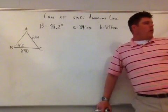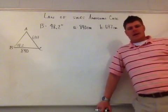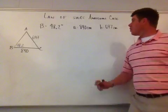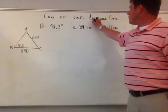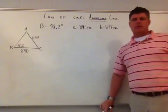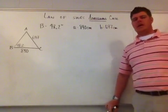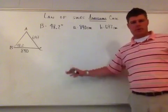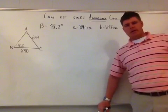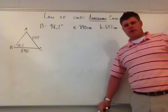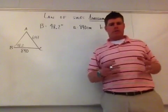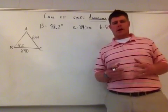We're going to talk about the Law of Sines, and in particular about the ambiguous case. The reason the ambiguous case comes up relates back to whether a triangle can be formed from the given sides or not.